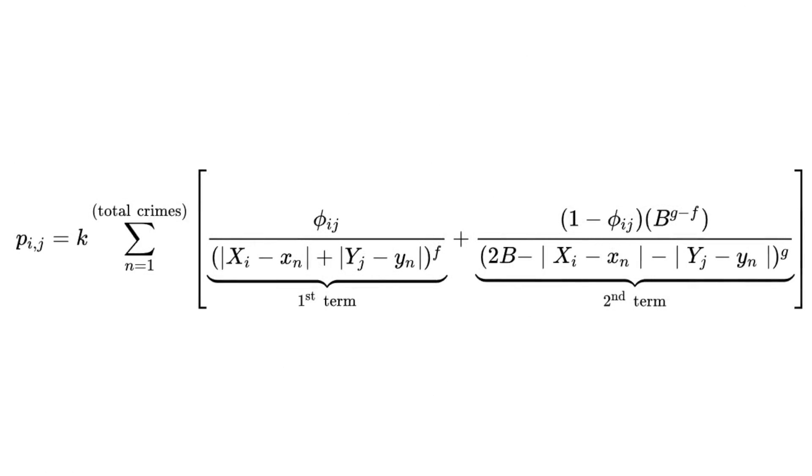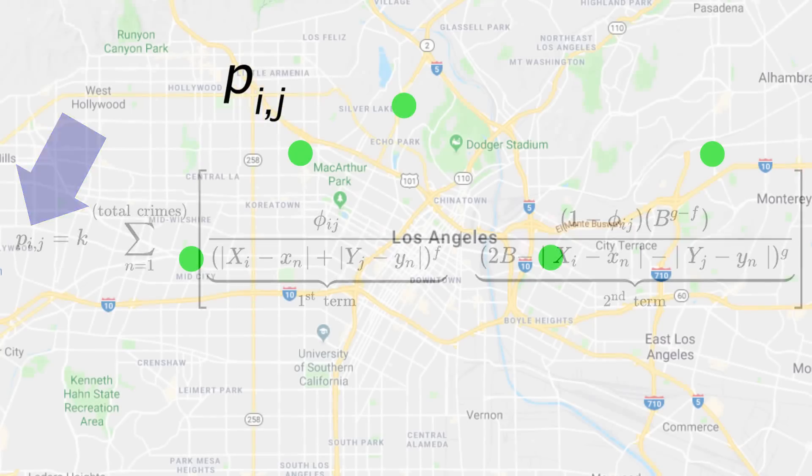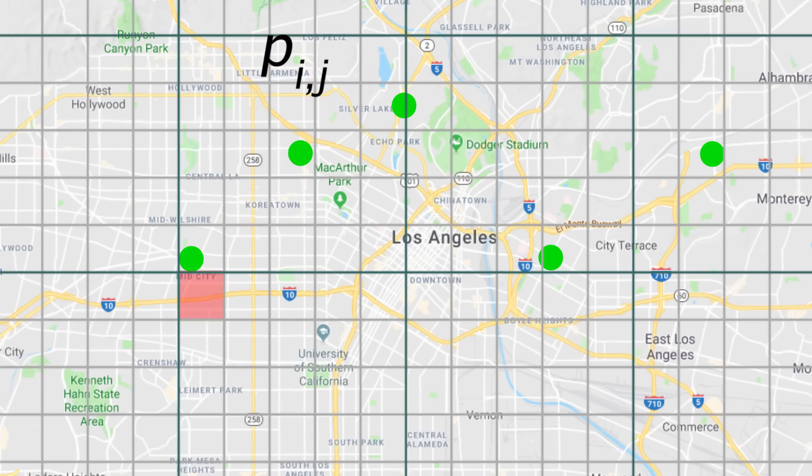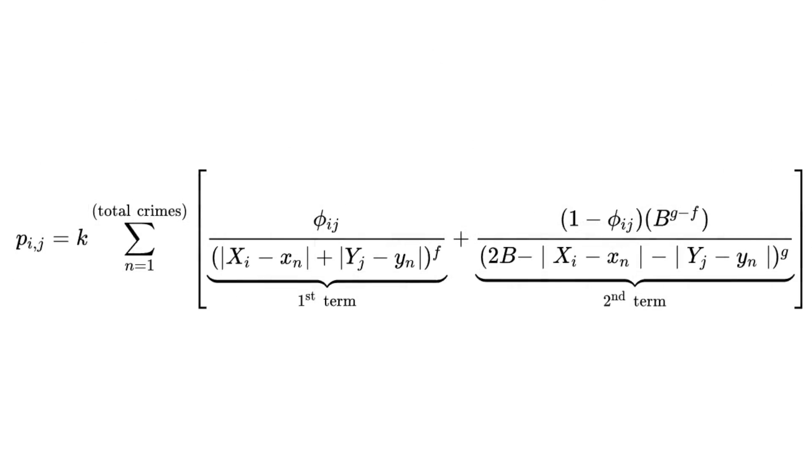I know it looks complex, but it's actually not as bad as you think. Like, take this P_i,j part. If we go to our map with the crime scenes and put a grid over it, any given square will be in some row we'll label i, and column we'll label j. P_i,j is the probability that the criminal lives in that square. How you calculate that value for any square is with this right side of the equation.